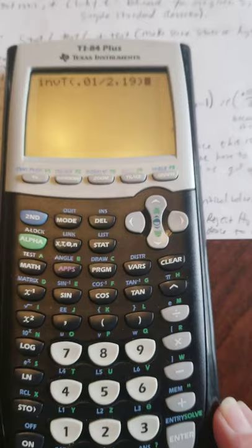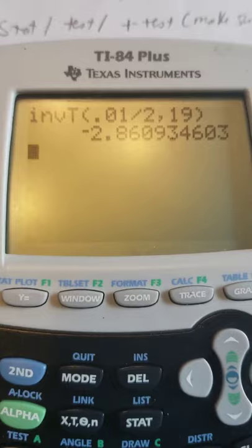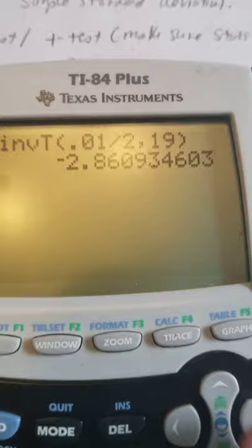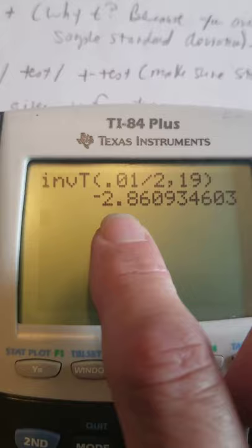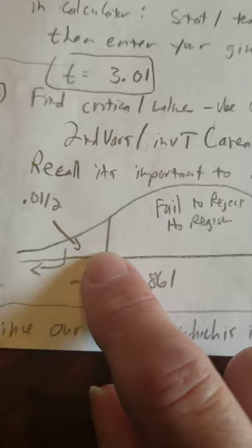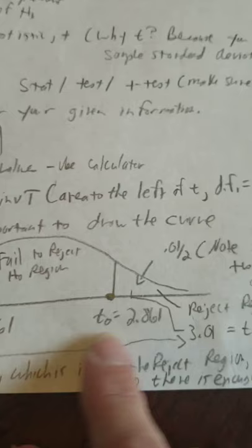And it gives me my critical value. On this one, they asked for three decimal places. So, negative 2.861. That 9 tells the 0 to become a 1. Negative 2.861. That is my critical value for the left region of rejection. Remember, it's symmetric. So, the right is going to be the same number without the negative sign. 2.861 positive. Now, that defines my reject region.